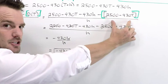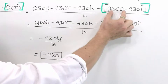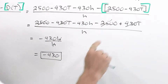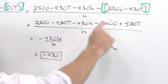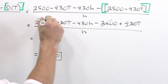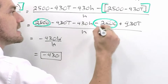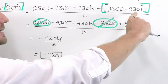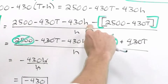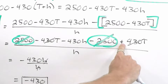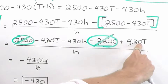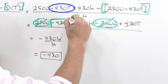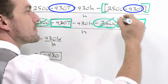Here's the original function. We want to see if the 2500 will cancel somewhere inside the difference quotient. It became negative 2500 here, and we had a positive 2500 up front, so those cancel. The other thing is we have negative 430T in the back. It gets distributed with the minus to make it positive, and we can see that minus 430T right here cancels with plus 430T.